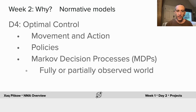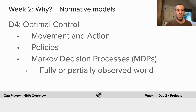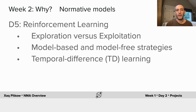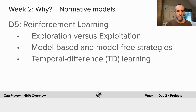Once we've inferred latent variables in the world, you'll want to act — this is the domain of optimal control. If you're doing normative modeling, this tells you the best way to control your actions in the world. You'll learn about policies, which are strategies for what to do in any given state, and we'll develop the mathematical foundations using Markov decision processes for both fully and partially observed worlds. If you don't know the world structure and have to learn it, you use reinforcement learning — trading off between exploring and exploiting — including model-based and model-free strategies and temporal difference learning.